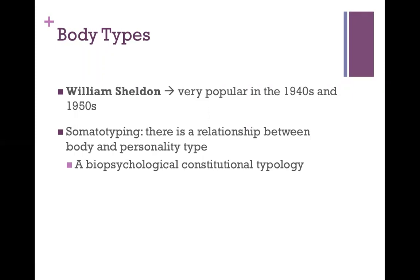This is known as somatotyping or somatotype theory. According to the theorist William Sheldon, your body type really tells us a lot about you, and there's a correlation between what type of body you have and what type of person you are. So it's really this biopsychosocial constitutional typology. The work he did was very popular in the 40s and 50s, and courts during this time commonly used this body typing to determine if a troubled child needed to be institutionalized.